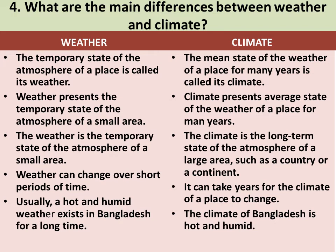Difference 3 — Weather is the temporary state of the atmosphere of a small area. Climate is the long-term state of the atmosphere of a large area, such as a country or a continent. Difference 4 — Weather can change over a short period of time. Climate: It can take years for the climate of a place to change. Difference 5 — Usually a hot and humid weather exists in Bangladesh for a long time. Climate: The climate of Bangladesh is hot and humid.